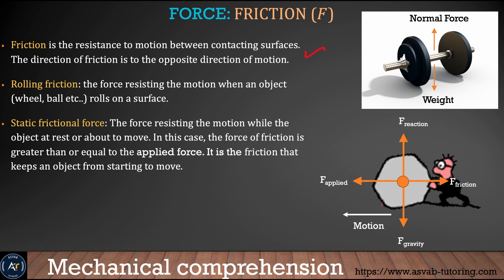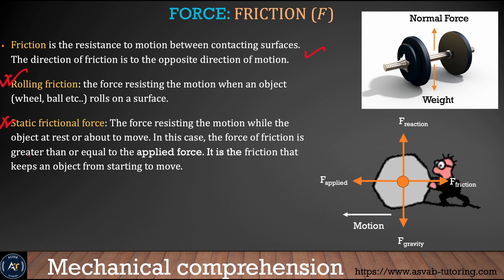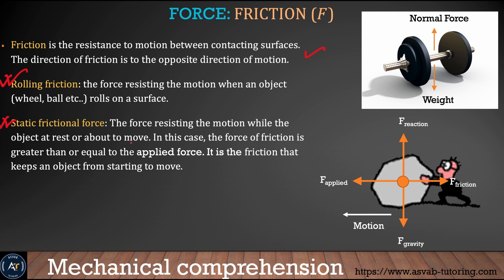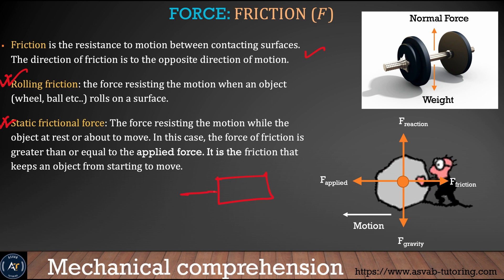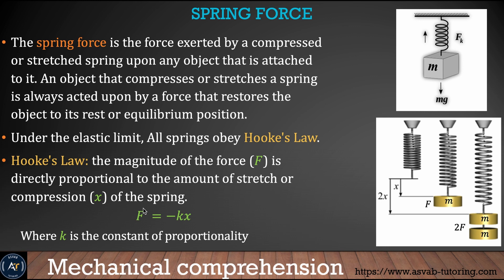Friction is the resistance to motion between contacting surfaces. There are basically two types of friction: rolling friction and static friction. When you ride a bike and stop pedaling, the bike slows down because of gravity and rolling friction — that is friction due to motion. Static friction is when you have a book on a table; to move it you have to break the friction barrier by slowly applying force until it starts moving.